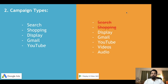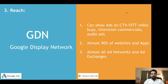In terms of campaign types, in Google Ads you can run Search, Shopping, Display, Gmail, and YouTube campaigns. However, in DV360 you cannot run Search and Shopping ads, but you can run video and audio campaigns. Note that video campaigns are different from YouTube — video in DV360 means uploading a video file and advertising it on different websites and apps.